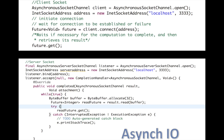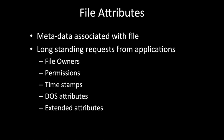Next is file attribute. File attributes typically deal with who owns the file, the permissions, timestamps, disk operating system attributes, and externals. There is also some metadata associated with the file — all of this defines a file attribute.